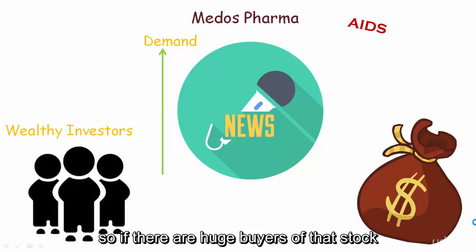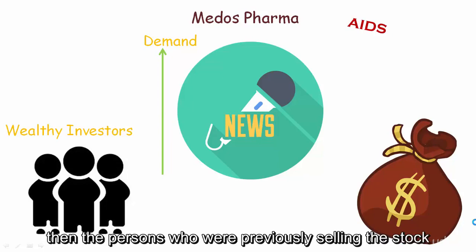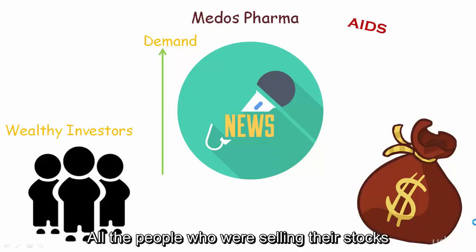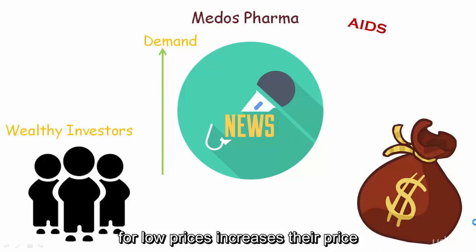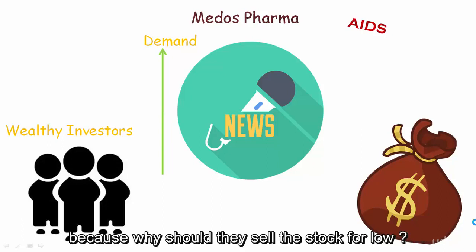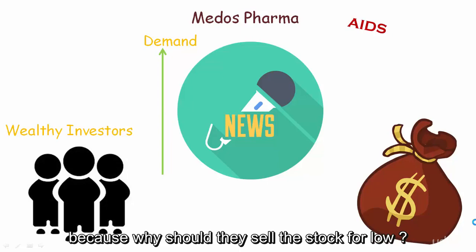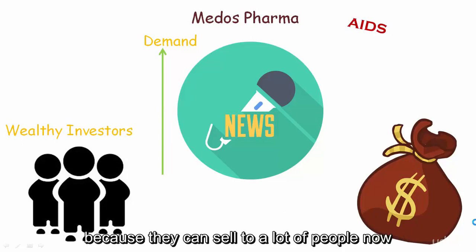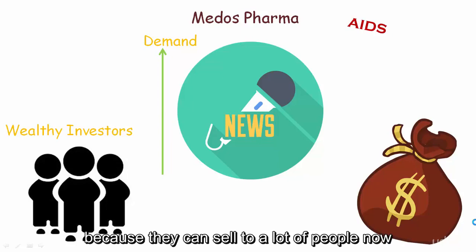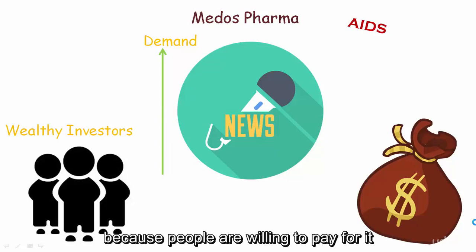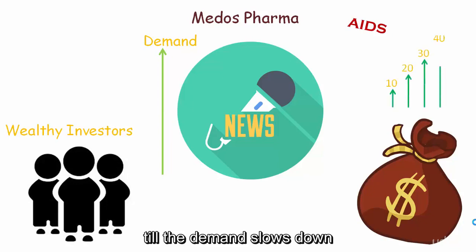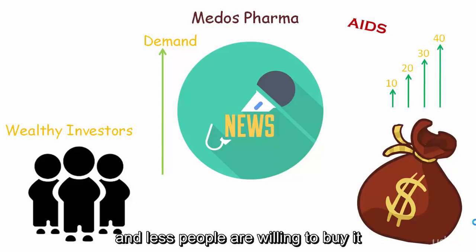With huge buyers for that stock, the people who were previously selling the stock at low prices increased their asking price — because why would they sell for a low price when they can sell to many people at a higher price? Sellers kept on increasing the price until demand slowed down, fulfilling demand and making a huge profit from the opportunity.